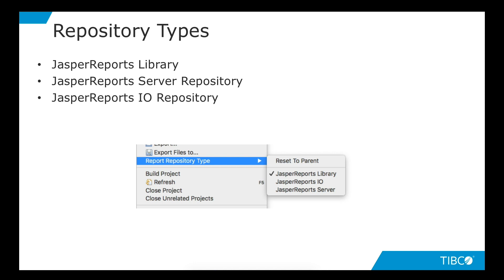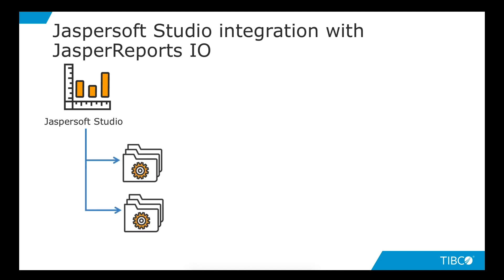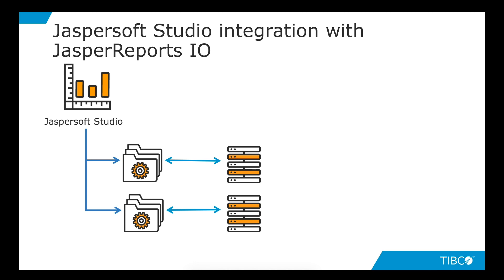When you create a new project in JasperSoft Studio, you have the option to specify which type of repository you are going to work with when executing reports. JasperSoft Studio uses this information to show the appropriate viewer and activate the mechanism for the specific engine underlying that repository type. When a project is set to type JasperReports IO, JasperSoft Studio spawns an embedded server of JasperReports IO, allowing the user to be sure that report execution acts just like it would in a real JasperReports IO environment.